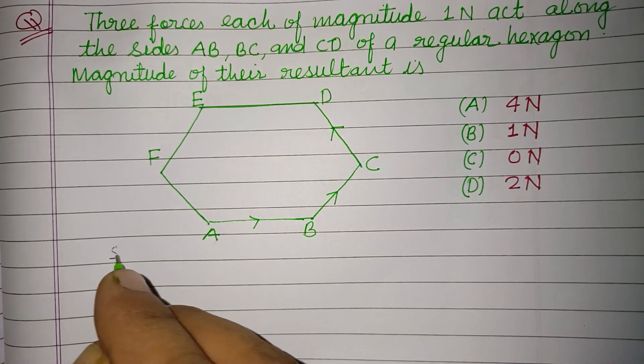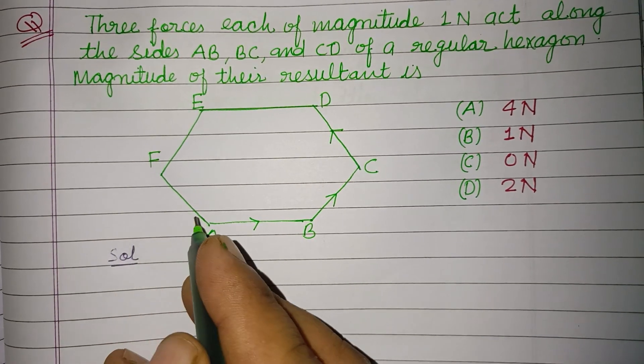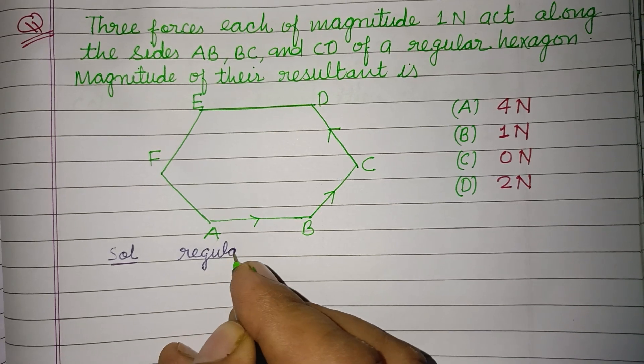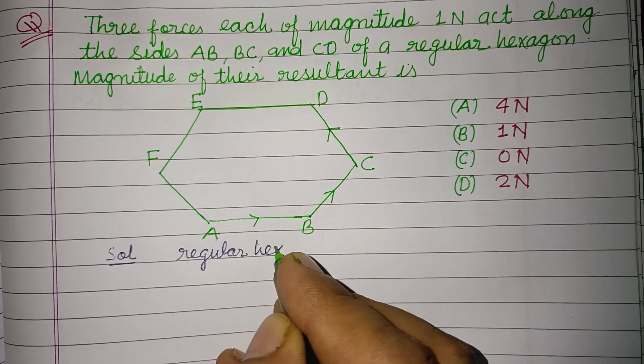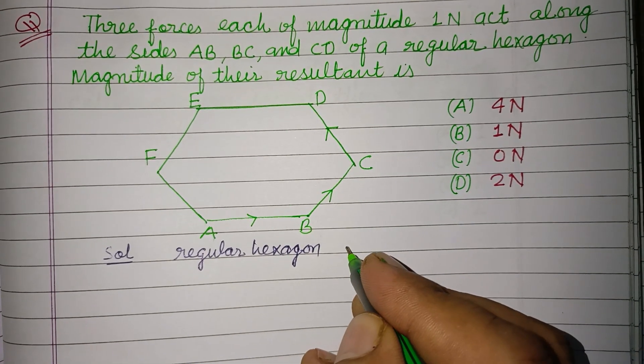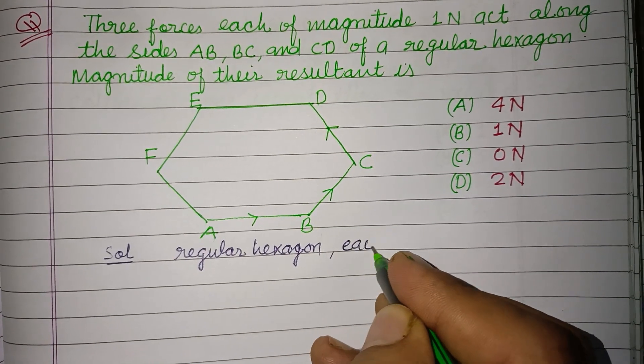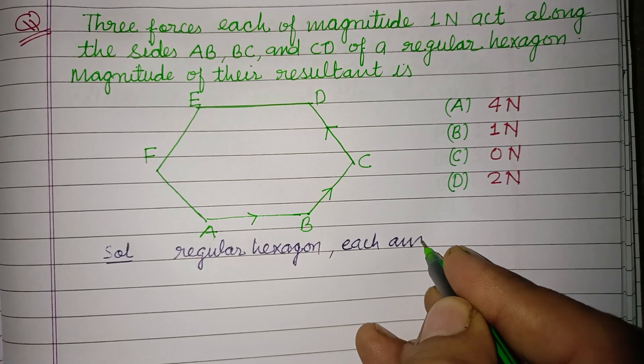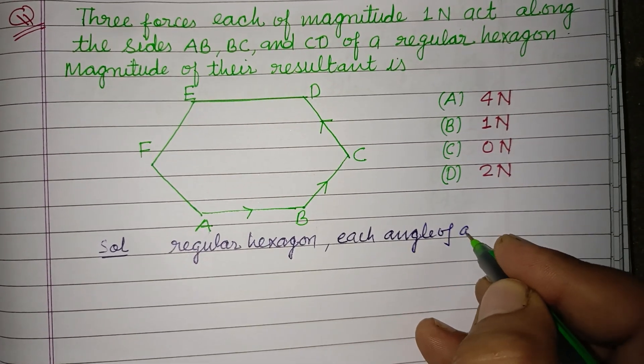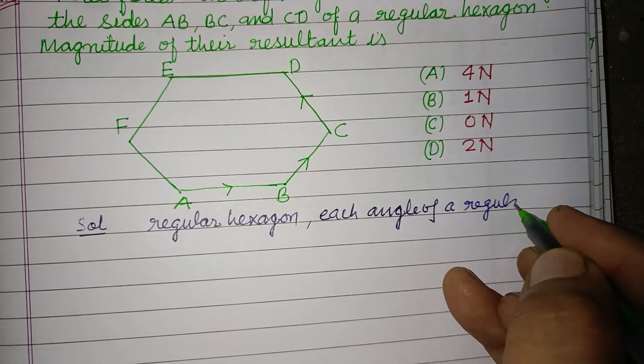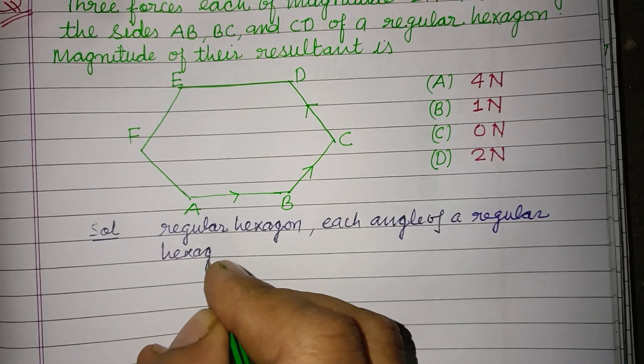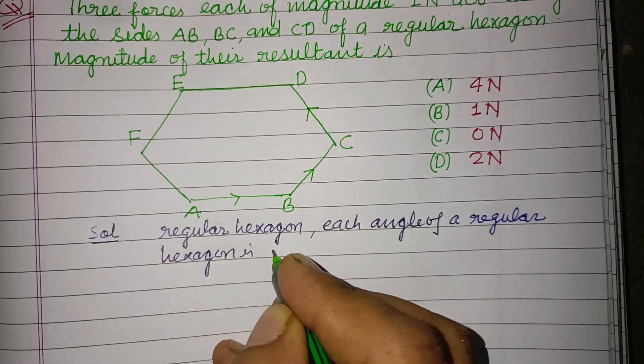So students, first of all this shape is regular hexagon, therefore each angle of a regular hexagon is 120.